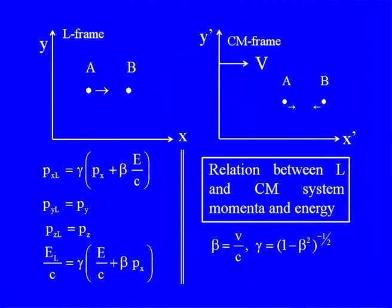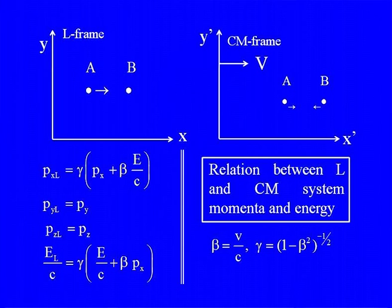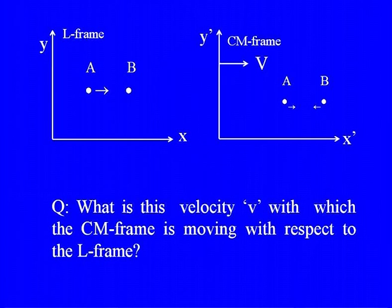The energy transforms like the time-like component. The energy in the lab system E_L/c equals gamma·(E/c + beta·p_x), where E is the centre-of-mass energy and p_x is the x-component of 3-momentum in the centre-of-mass system.